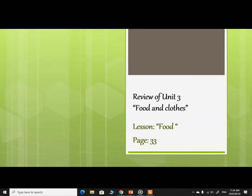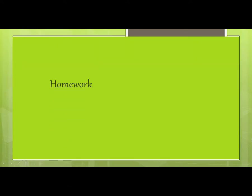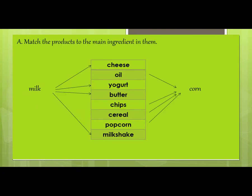Now it's time to see your homework. The question is: match the products to the main ingredient in them. The products given are: cheese, oil, yogurt, butter, chips, cereal, popcorn, and milkshake.